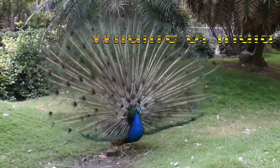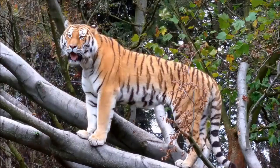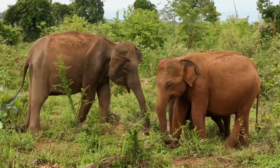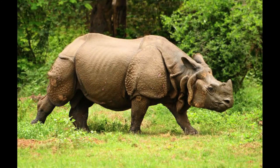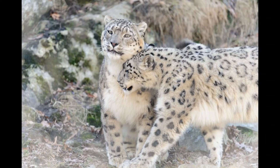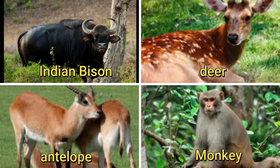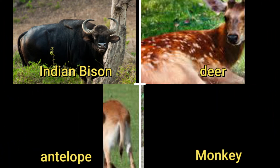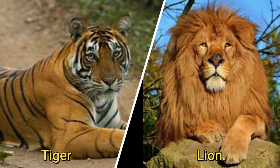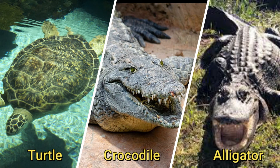Now let's proceed with the wildlife of India. India is also a mega-diverse country in terms of wildlife. Elephants are found in hot and humid forests. One-horned rhinoceroses are found in the swampy and marshy lands of Assam. Wild ass and camels are found in arid lands. Snow leopards and yaks are found in the snow-capped region of the Himalayas. Indian bison, deer, antelopes, and monkeys are found in the peninsular region. India is the only country in the world where both tigers and lions are found. Rivers, estuaries, and coastal areas are home to many turtles, crocodiles, and gharials.